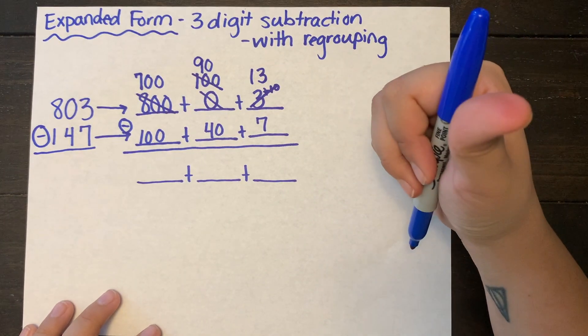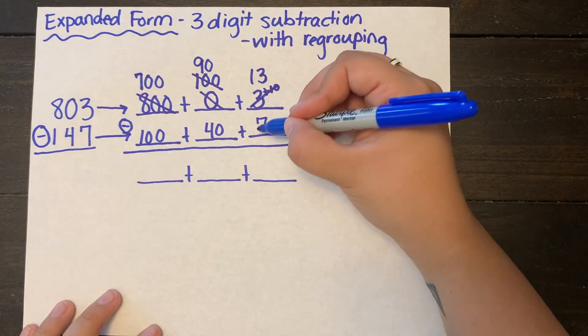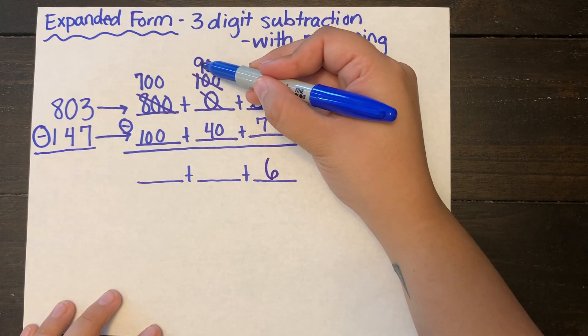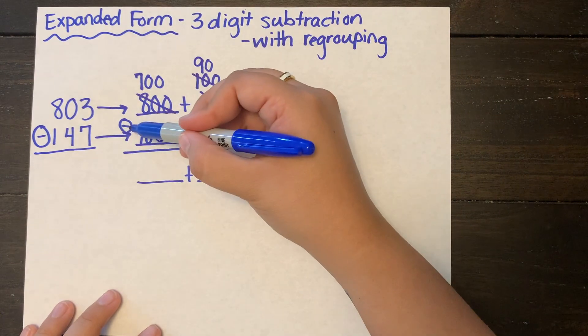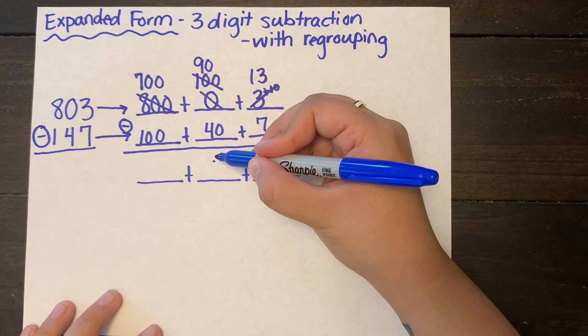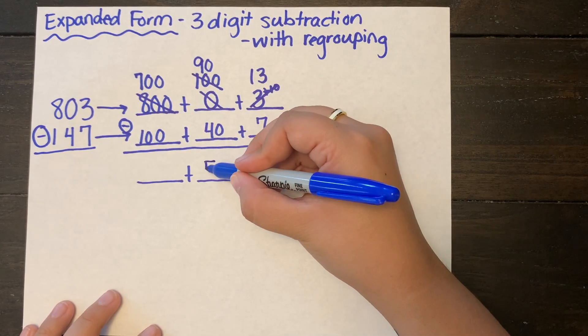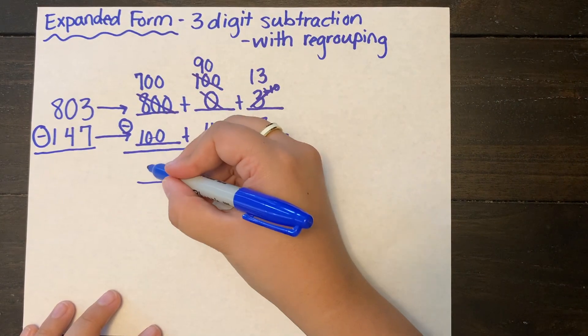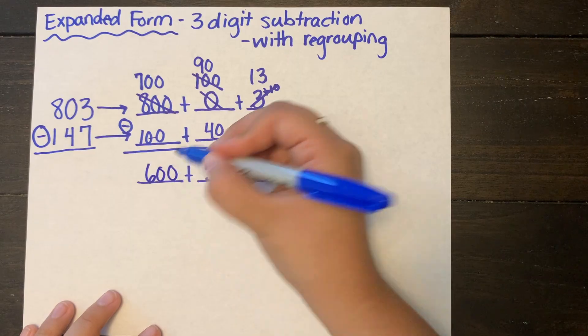So I see I have thirteen take away seven, that's gonna leave me with six ones. I have ninety take away forty, that's gonna leave me with fifty or five tens. And finally, easy peasy, I take one hundred away from my seven hundred to leave six hundred.